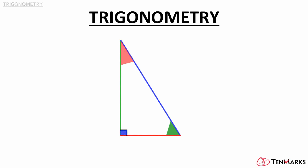In right triangles, the three important trigonometric ratios are sine, cosine, and tangent.